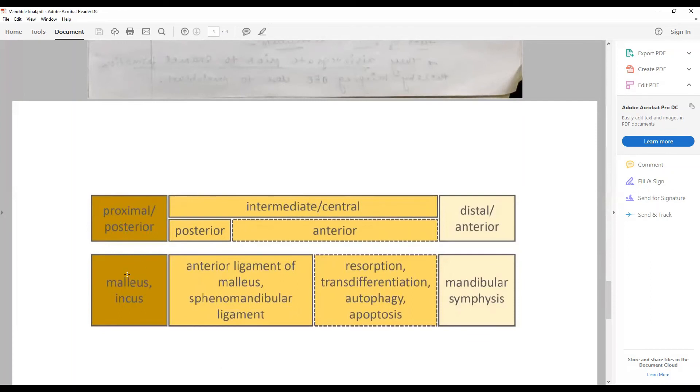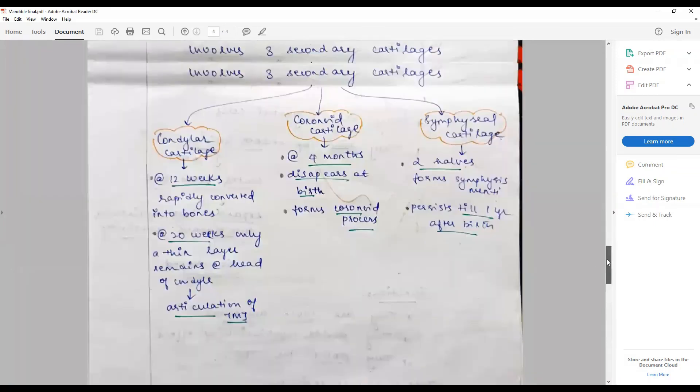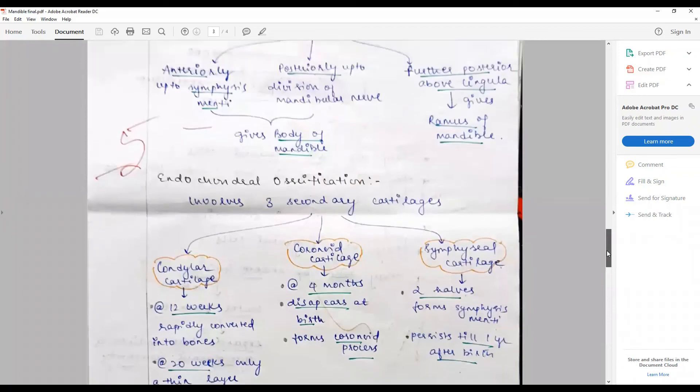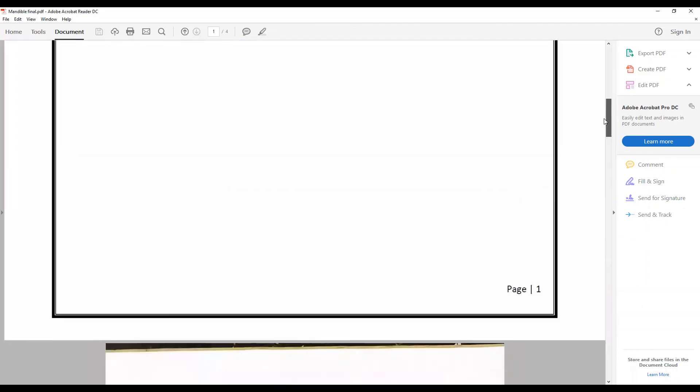The posterior part contributes to the malleus and incus. The central part and posterior: anterior ligament of malleus and sphenomandibular ligament. The extreme anterior is resolved. The distal or anterior part contributes to the mandibular symphysis. The clinical relevance: when there is abnormality, there could be cleft of the mandible, and that is very rare.